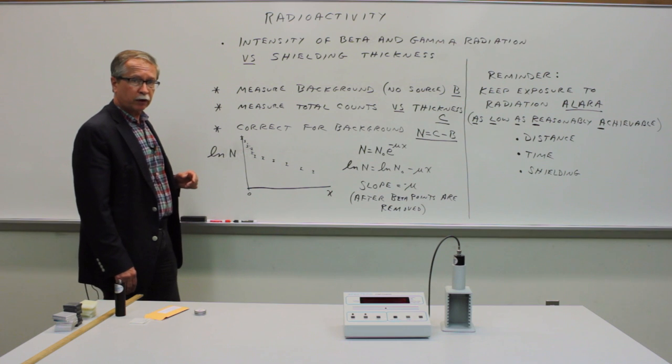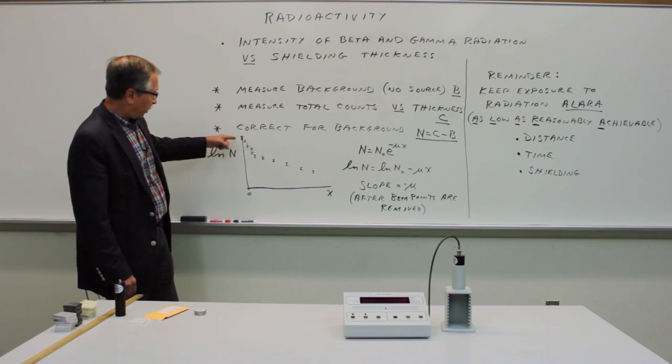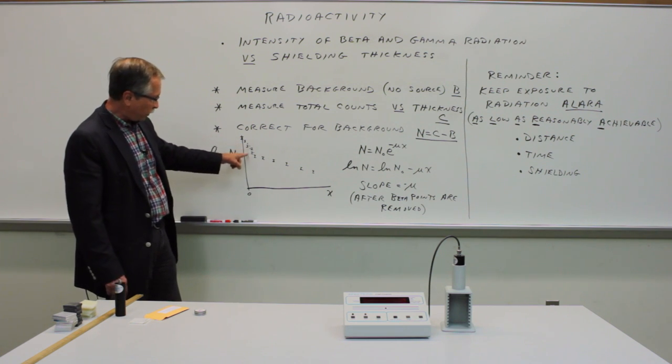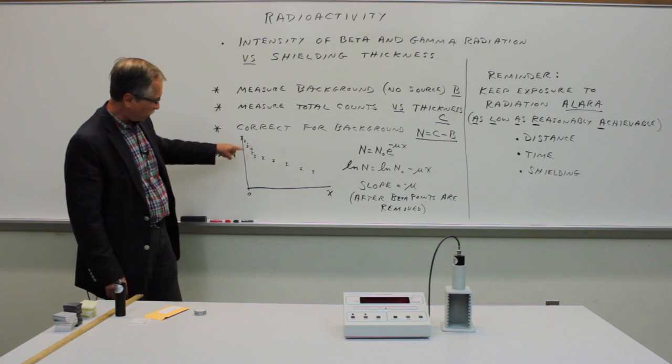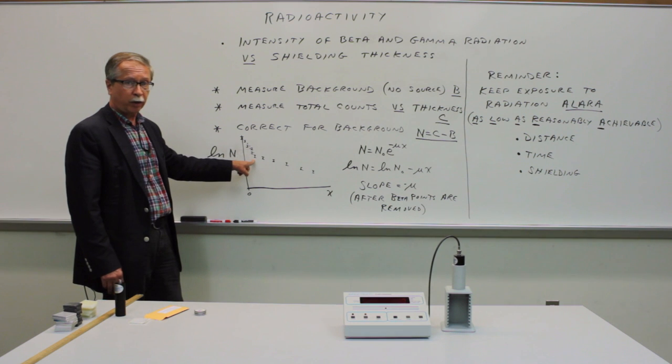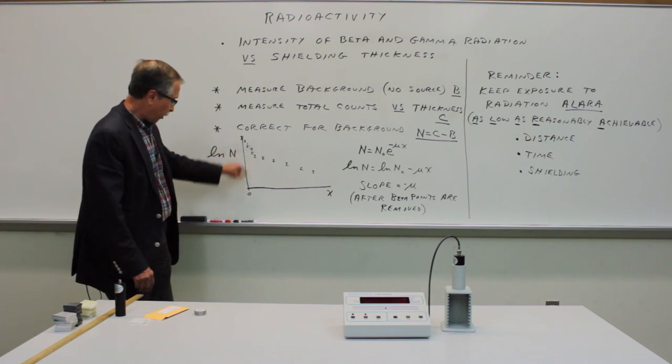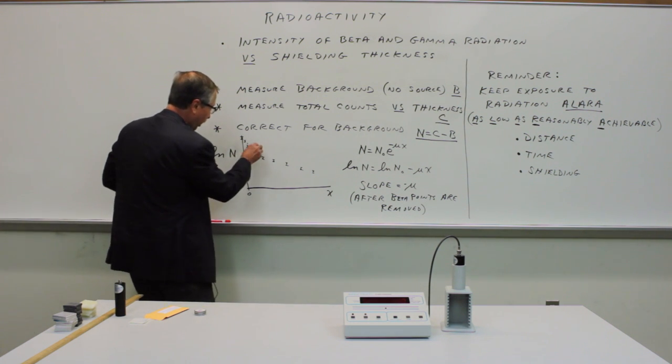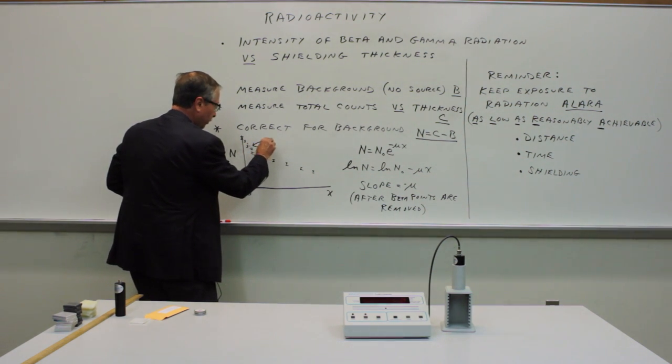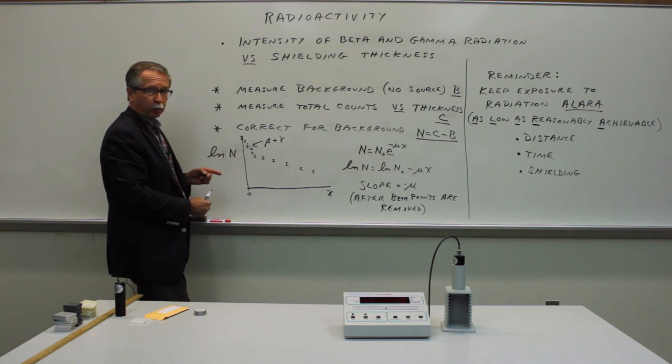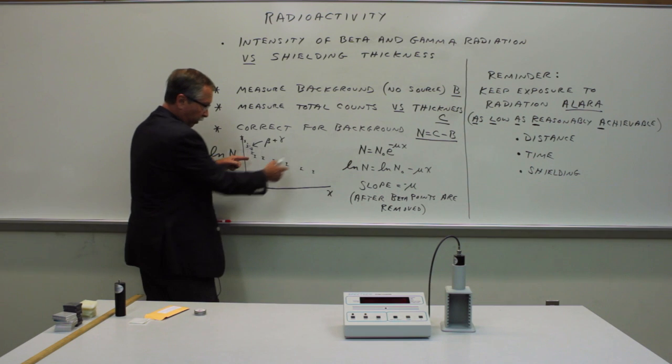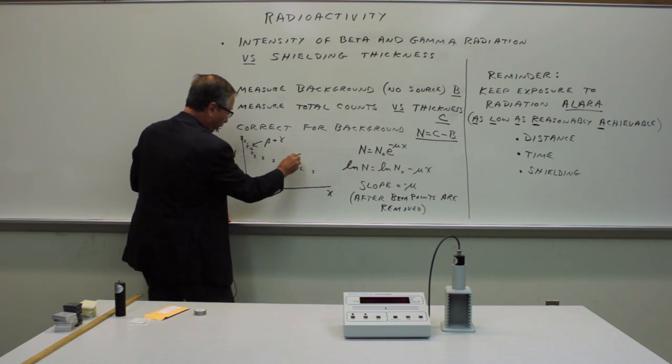But now you'll see two different features to the plot. The early data involving very thin pieces of material will indicate how much material is required to stop the beta. So we have at first both beta and gamma radiation for this early part of data. And once you put in enough material to completely block the beta particles, all you're left with are the gamma rays.